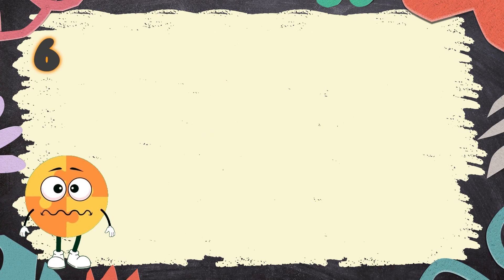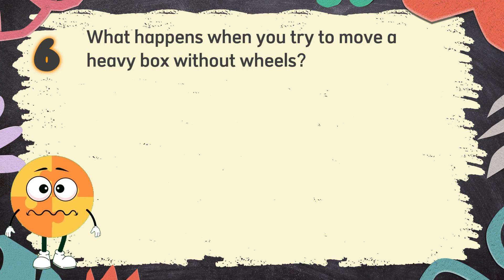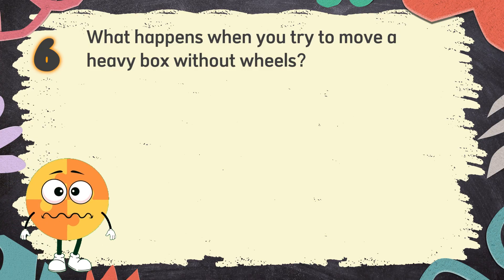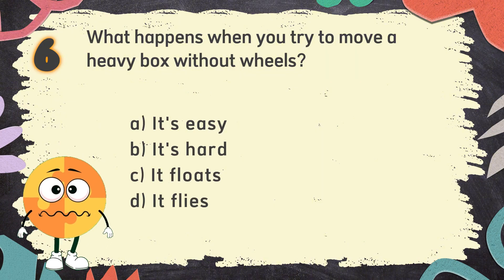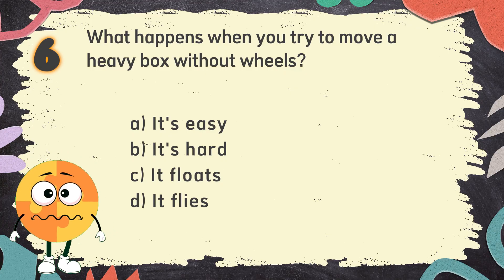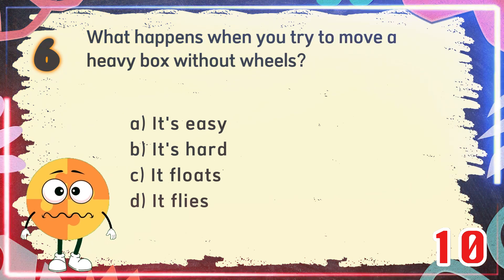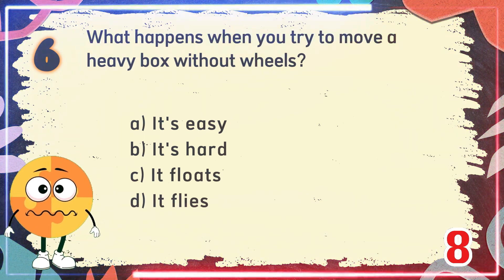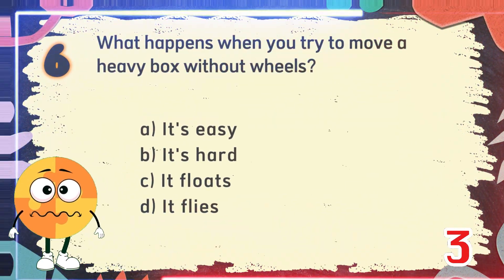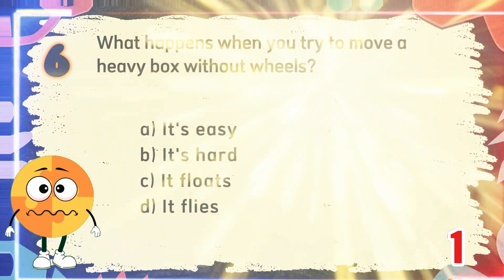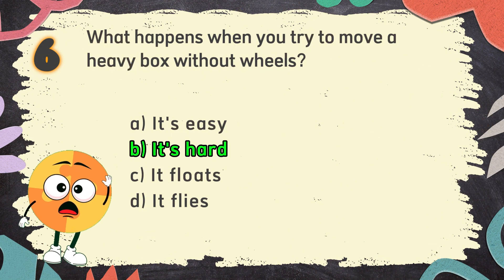Number 6. What happens when you try to move a heavy box without wheels? The choices are: A. It's easy. B. It's hard. C. It floats. D. It flies. The correct answer is B. It's hard.